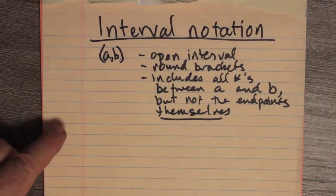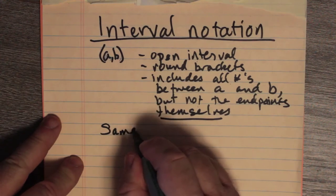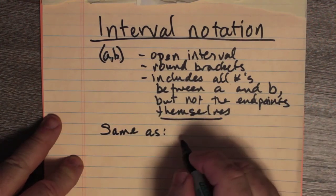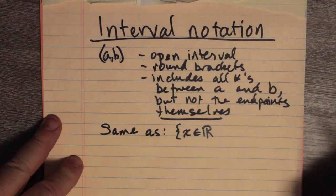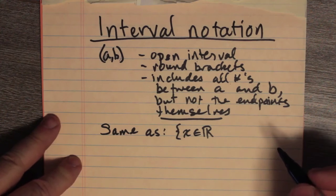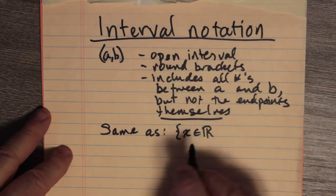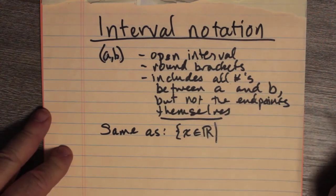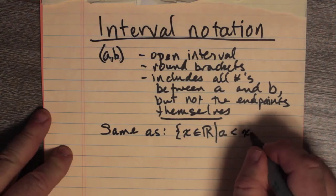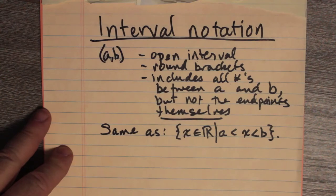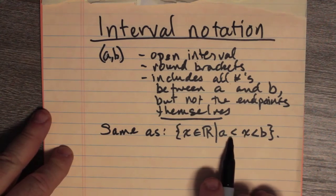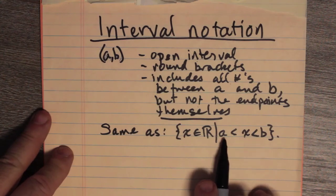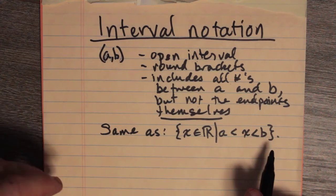In interval notation, it's the same as the set builder notation of x belonging to the set of reals — or it could be the set of integers, but for practical purposes since most of our functions are real valued, we say x belongs to the set of reals such that x is a number between A and B. A is less than x and x is less than B, meaning x is between A and B.